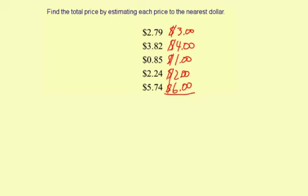Now we'll add: 3 and 4 is 7, plus 1 is 8, plus 2 is 10, plus 6 is 16. So that's the total price estimated to the nearest dollar.